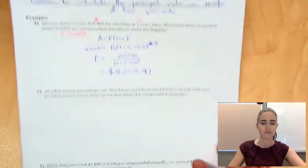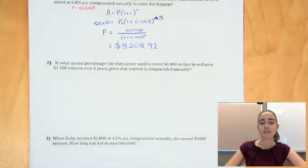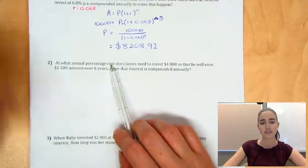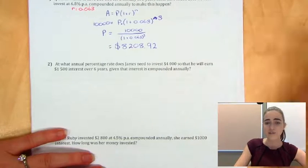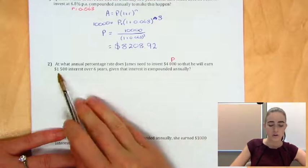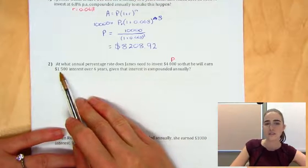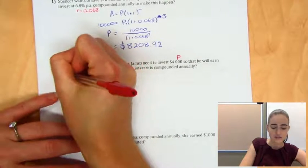It asks, at what annual percentage rate does James need to invest $4,000 so that he'll earn $1,500 interest over six years, given that interest is compounded annually. So in this one, we're finding the rate. So what we do know is he's investing $4,000, so that's our principal. We want him to earn $1,500 interest. So this isn't our amount. This is the interest that he's earning.